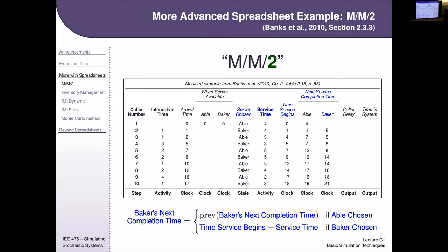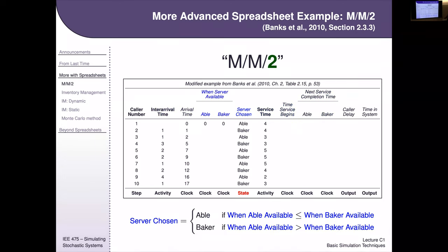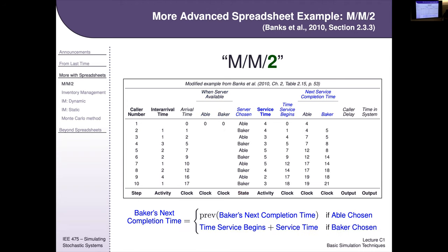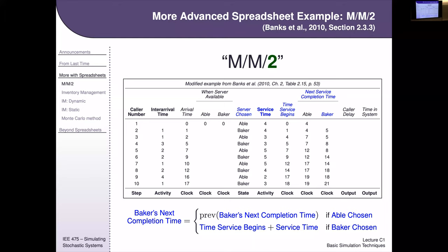When both servers are available at the start, the 'less than or equal to' condition in the server-chosen column breaks that symmetry. Although we're not implementing event-by-event steps like in a hand simulation, the essence of events, activities, and delays is all captured in this logic. Inputs are the activity columns, clock columns handle the event logic, and output columns are derived from the full execution.